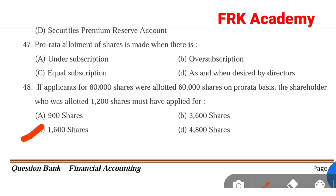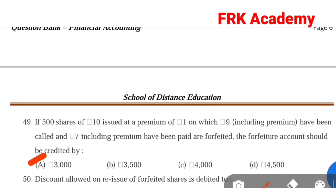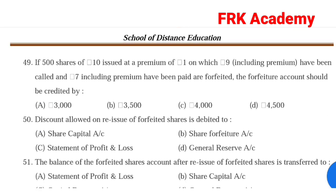Question 46: If 500 shares of Rs. 10 issued at a premium of Re. 1, on which Rs. 9 including premium have been called, and Rs. 7 including premium having been paid, are forfeited — the forfeited account should be credited by. Question 25: Discount allowed on reissue of forfeited shares is debited to. Answer: Option B, share forfeiture account.